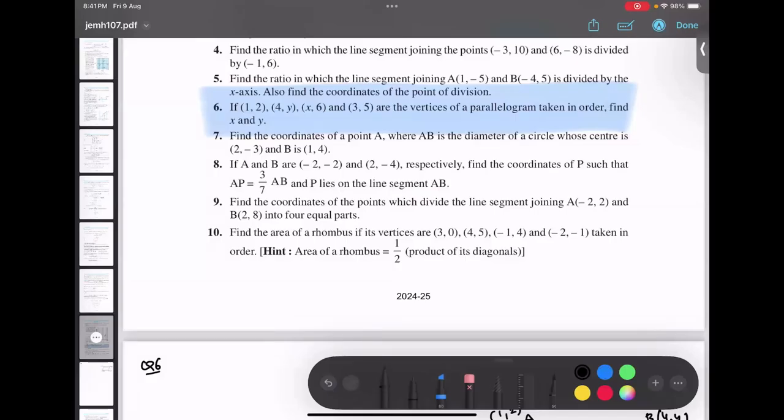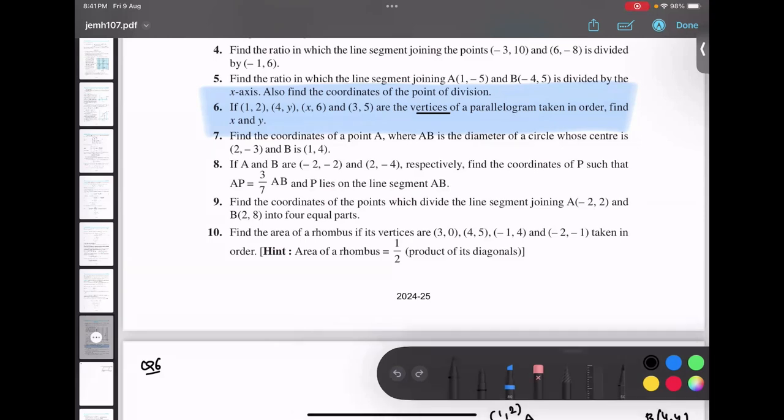So, in question number 6, 4 points are given that are the vertices of the parallelogram. They have already told us that it is a parallelogram and we need to find the value of x and y.